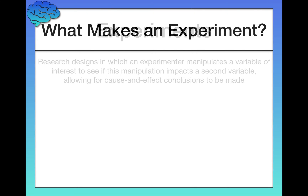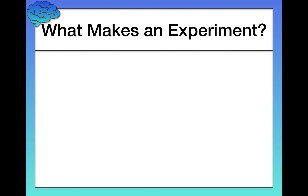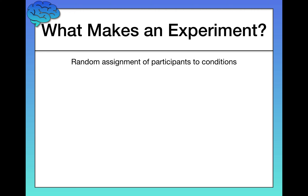Some of this will become more clear as we answer the question: what makes an experiment an experiment? There are two key factors. First of all, random assignment of participants to conditions.